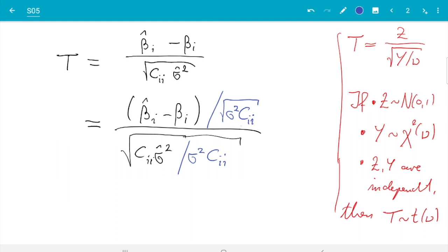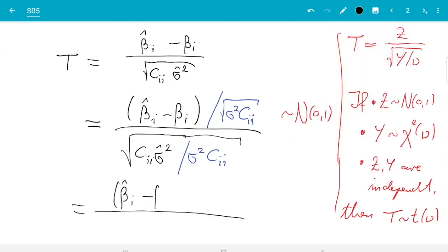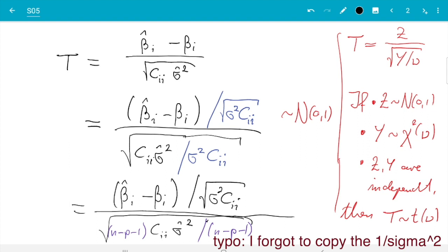Okay so the numerator is now standard normal distributed. And it turns out with the denominator we are also good. Namely, beta hat i minus beta i divided by square root sigma squared Cii. The only thing we need to do here is bring it into this form. And here we need at the end to divide by n minus p minus 1. That's going to be our degrees of freedom. And to make that right we pre-multiply with n minus p minus 1. These two will cancel in a minute. And then I copy the other terms Cii sigma hat squared. Good so that would do the job.